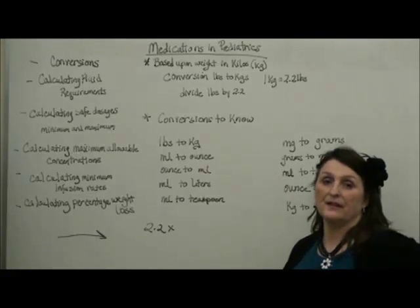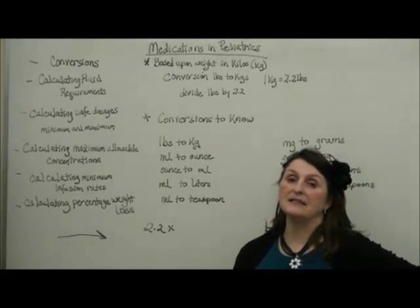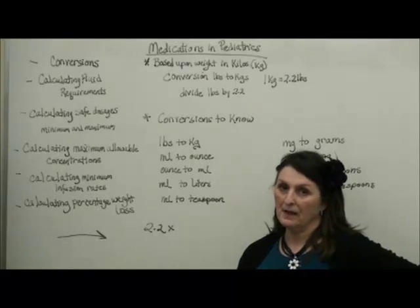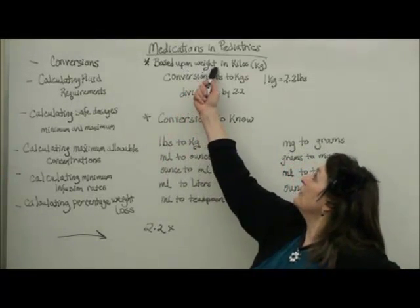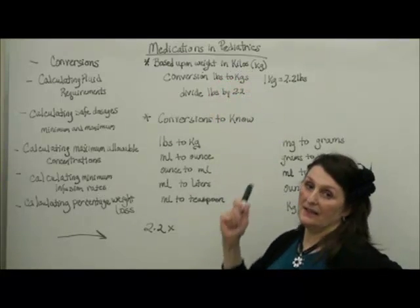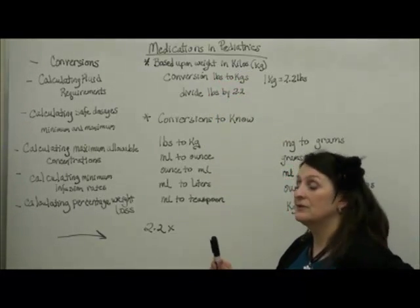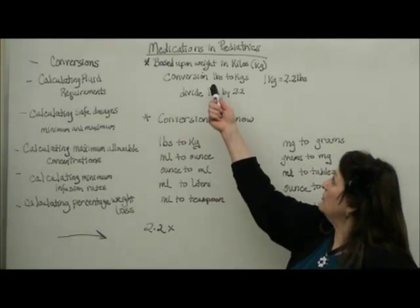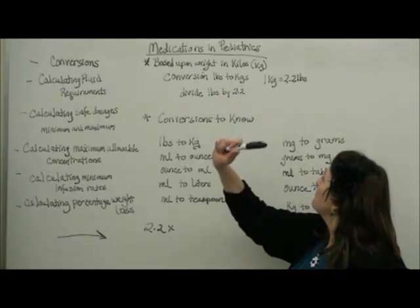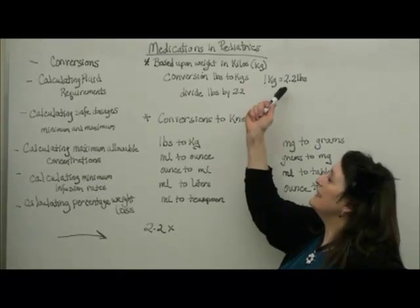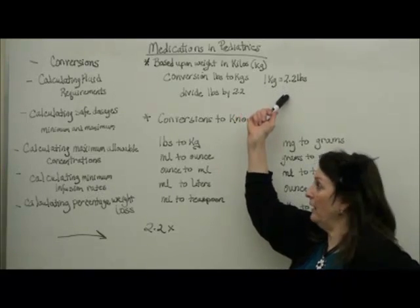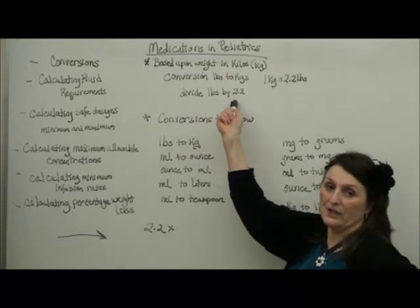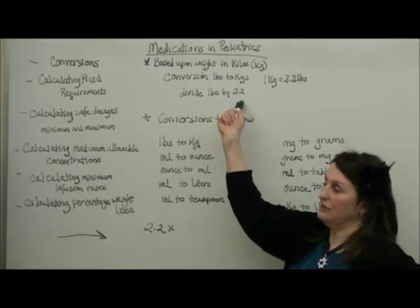The most important thing to remember in pediatrics is that everything is based on the metric system. So all of our medications, the weight is based on kilograms. So one of the most important conversions that you need to remember is how do we convert pounds to kilograms. One kilo is equal to 2.2 pounds. So we're going to divide pounds by 2.2 in order to convert to the metric system.